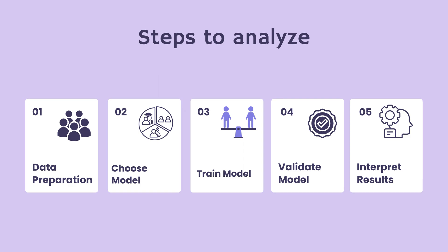Step 2: Choose Model — select the predictive model that aligns with your data and objectives, considering factors like complexity and the nature of your predictions. Step 3: Train Model — this involves teaching your model to understand patterns within your data, preparing it to make informed predictions.